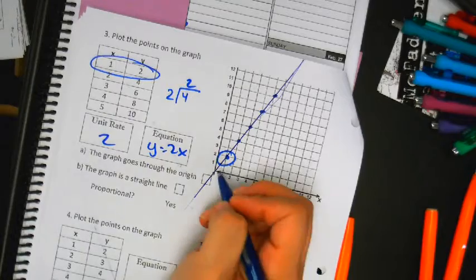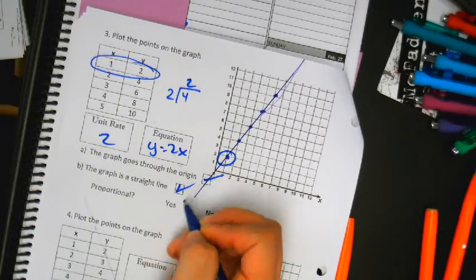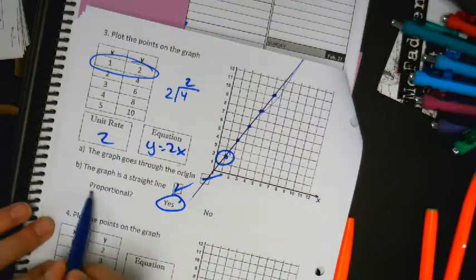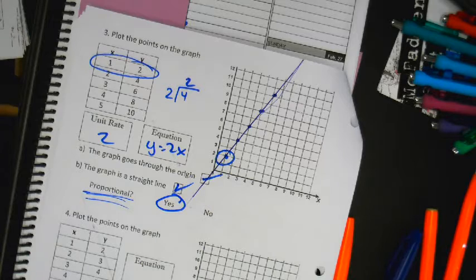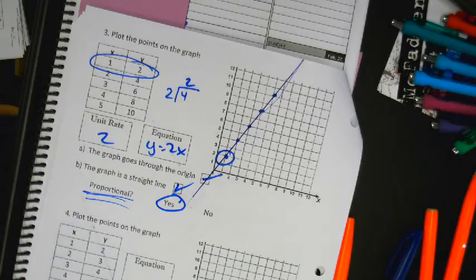So, does it go through the origin? Yes. Is it a straight line? Yes. It is proportional. Proportional means the price doesn't change. If you buy one hot dog, or if you buy a hundred hot dogs, each hot dog is worth the same amount of money. Okay?